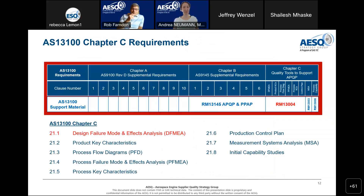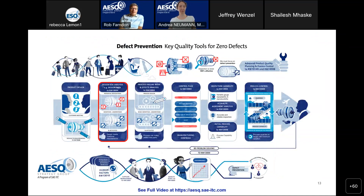The AS13100 Chapter C requirements are the sections dealing with defect reduction tools. Particularly, we're covering section 21.1 today — the Design Failure Modes and Effects Analysis section. There is also a video resource available — you can see the link on this slide — that takes a few minutes to run through and is quite good at explaining how the different defect prevention tools work together to achieve a trouble-free product in service.